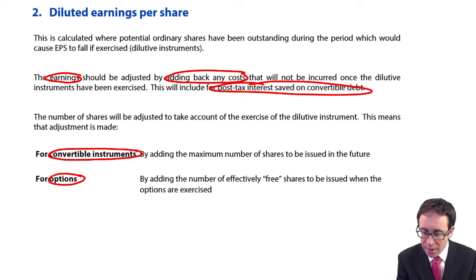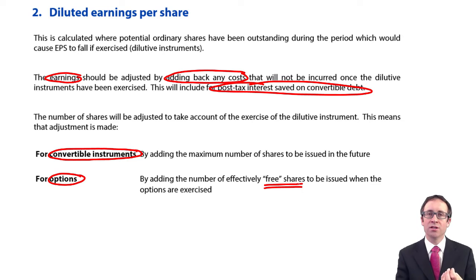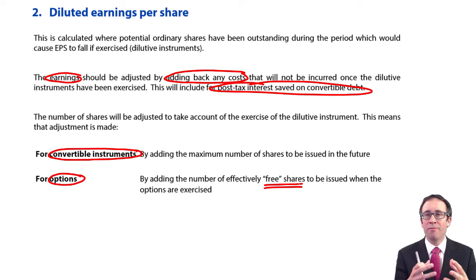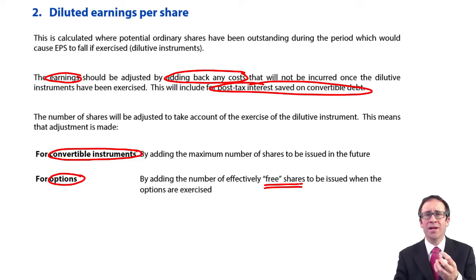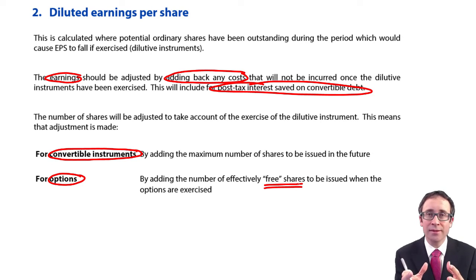The issue we have here is that we need to work out what the number of free shares issued is, thinking about it from an employee's perspective, whereby they have to make a payment to acquire these shares but that payment is less than if they were to pay full market value. The best way to think about it is using the marketing tool of buying three for two — maybe you can get three books for $10, and a normal paperback book costs $10.